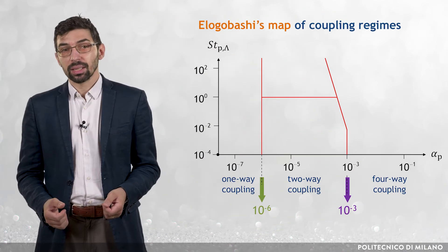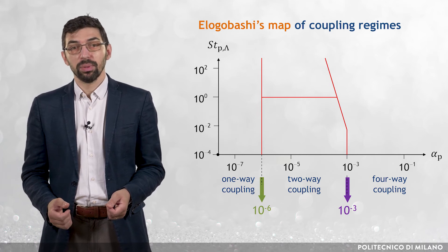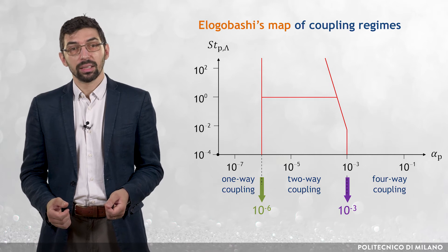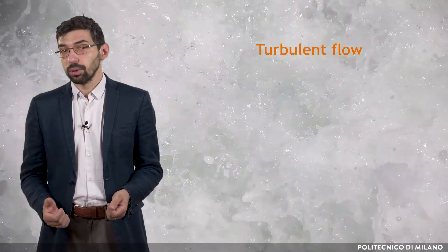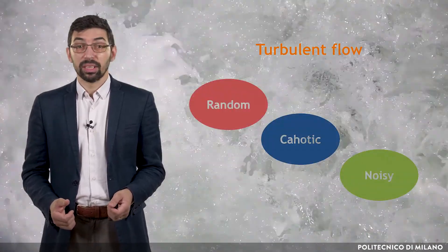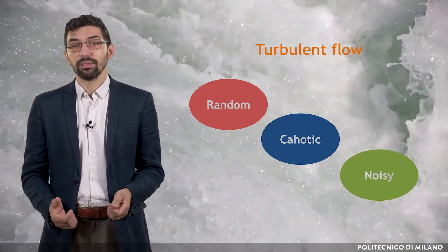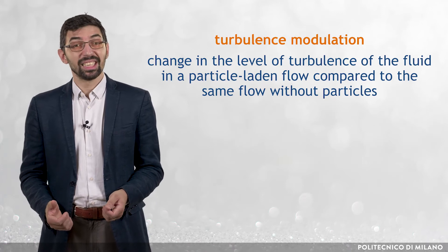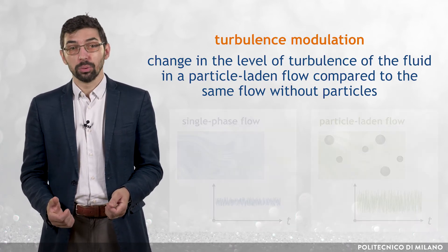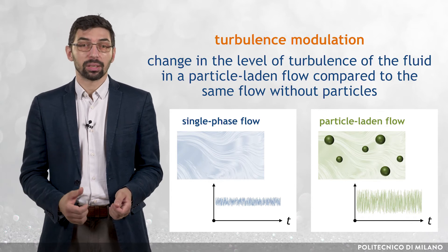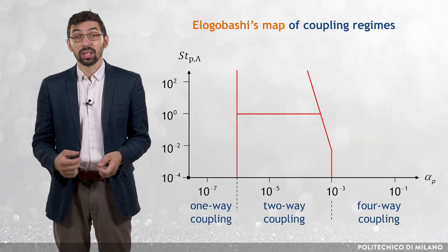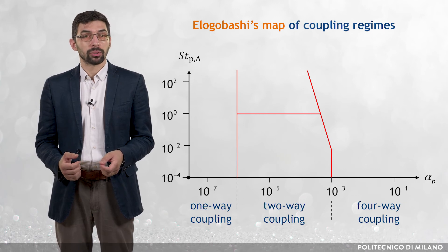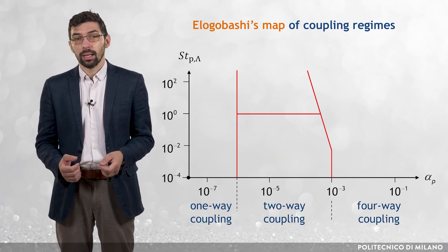El-Gobashi's map does not only set criteria to distinguish between the coupling regimes, but it also highlights a phenomenon characteristic of turbulent particle-laden flow in the two-way coupling regime. This phenomenon is called turbulence modulation, and it can be explained as follows. A turbulent flow is characterized by a random, chaotic, noisy behavior of the fluid dynamic variables. Turbulence modulation is the change in the level of turbulence of the fluid in a particle-laden flow compared to the same flow without particles. El-Gobashi's map indicates two opposite behaviors according to the value of the particle Stokes number based on the integral time scale, St_Λ.